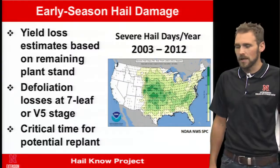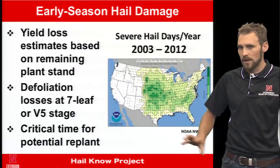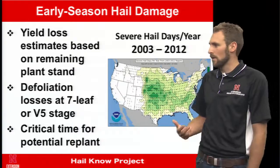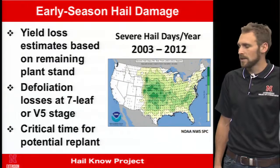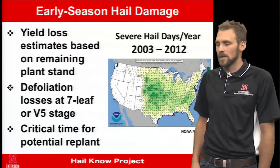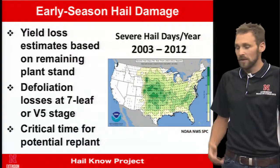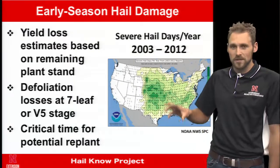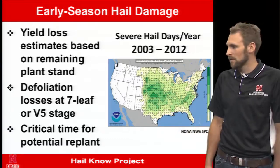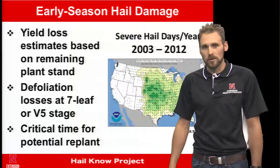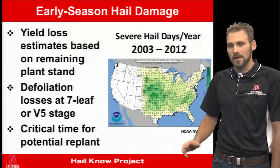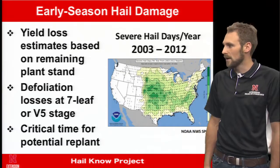We're going to cover early season hail damage, then focus quite a bit on mid and late season, where things get more complicated. Yield loss estimates early on are based on remaining plant stand. We're looking at defoliation starting once we reach the seventh leaf stage, or the V5 stage. I'm using two different staging methods: the horizontal leaf method by the National Crop Insurance Service, and the collar stage method you may be more familiar with. I'll cover that using an Iowa publication so you know how to translate back and forth when looking at an FCIC document.